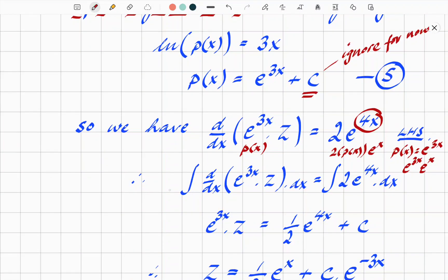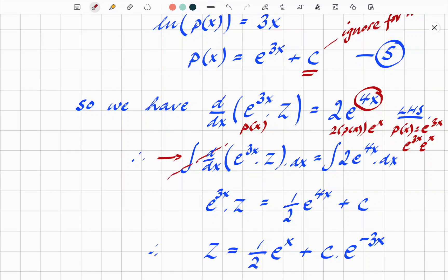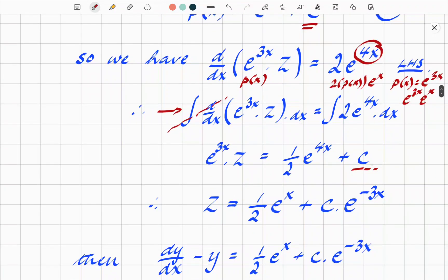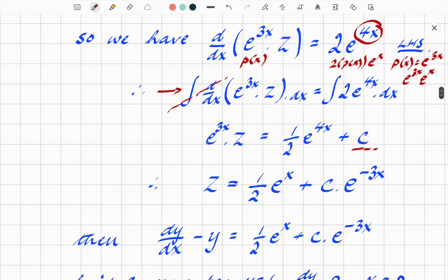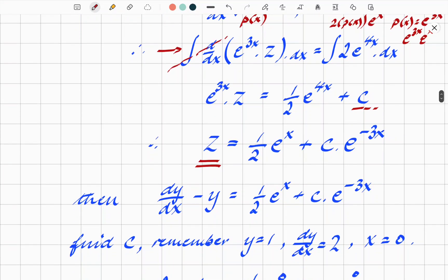We're going to get the result that, obviously that cancels, and on the right-hand side you're going to get (1/2)e^(4x) plus a constant of integration. This is why we ignored it earlier, because these constants are going to keep coming up and we only have to evaluate the one at the end. So e^(3x) times z = (1/2)e^(4x) + C. Rearrange, and now we actually have the function z, or at least a form of it: (1/2)e^x + Ce^(-3x), dividing everything by e^(3x) above.